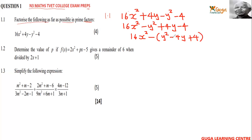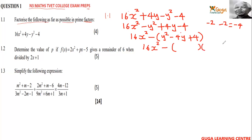What are the factors of 4? It's 2 and 2. These factors, when we apply them, should give us positive 4 — one negative and one negative gives us positive, and applying those gives us negative 4. So you've got 16x² minus into brackets.